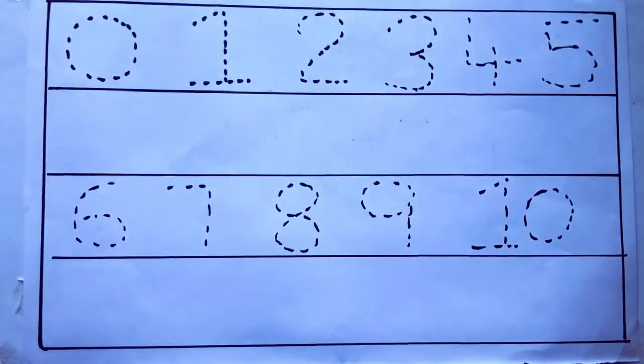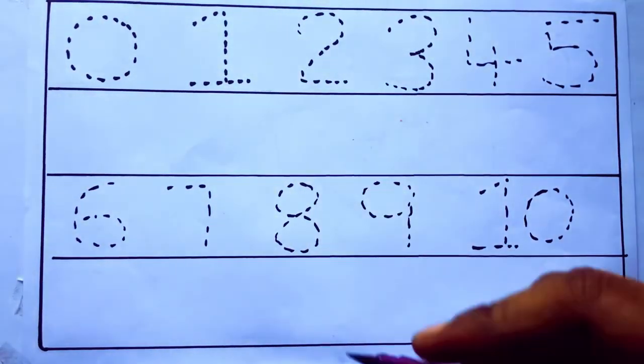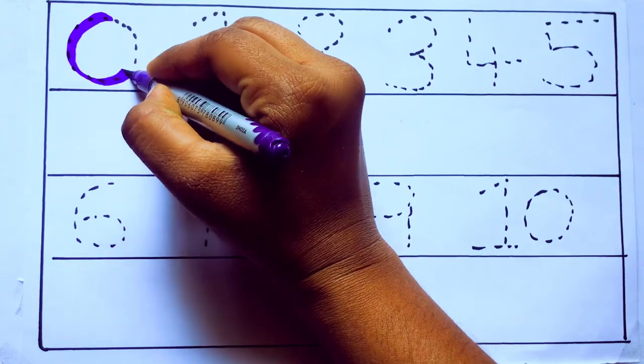Let's draw numbers. Violet color 0, Z-E-R-O.